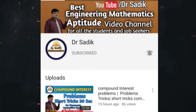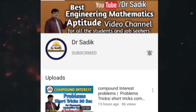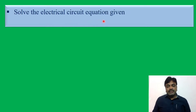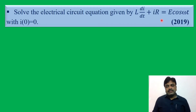Subscribe to Dr. Sadiq Mathematics channel for getting more online videos. Solve the electrical circuit equation given by L dI/dt + Ir = E cos(ωt), with initial condition I(0) = 0.